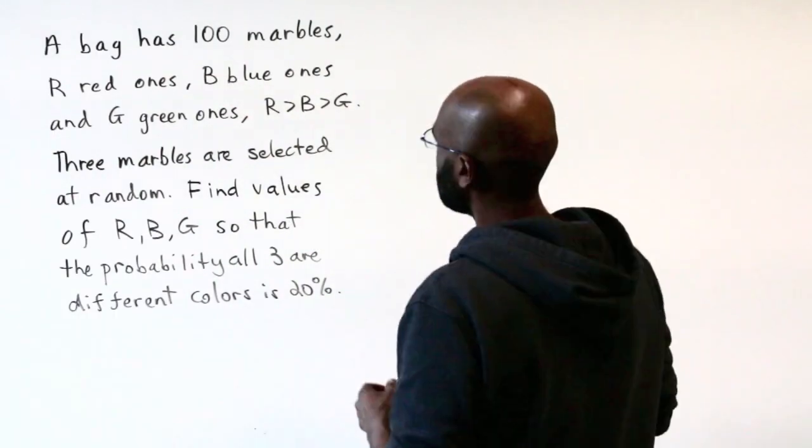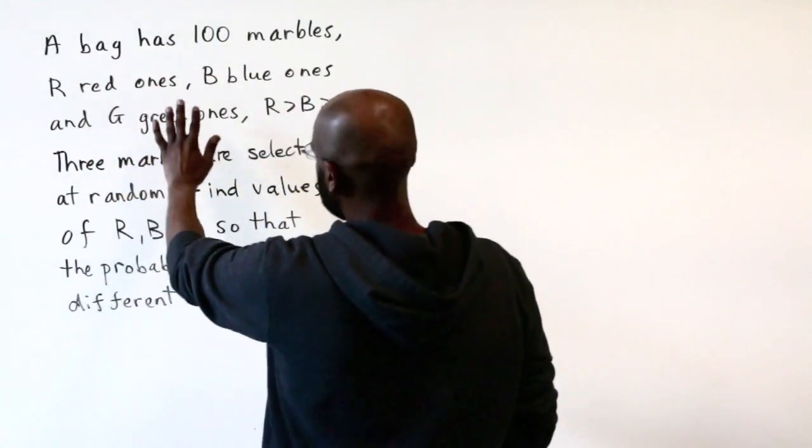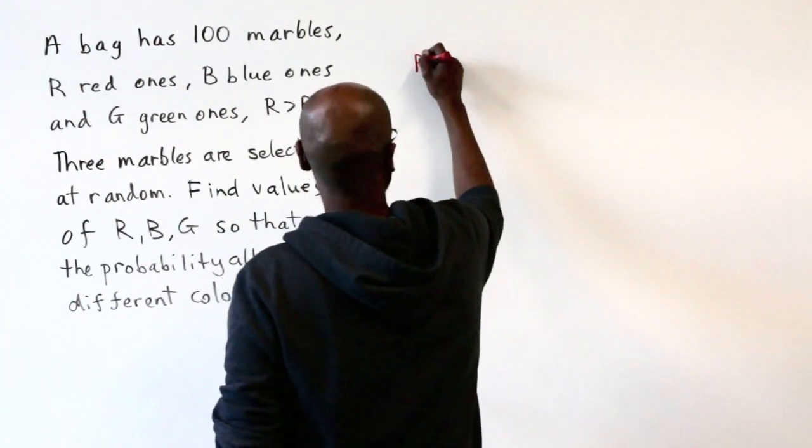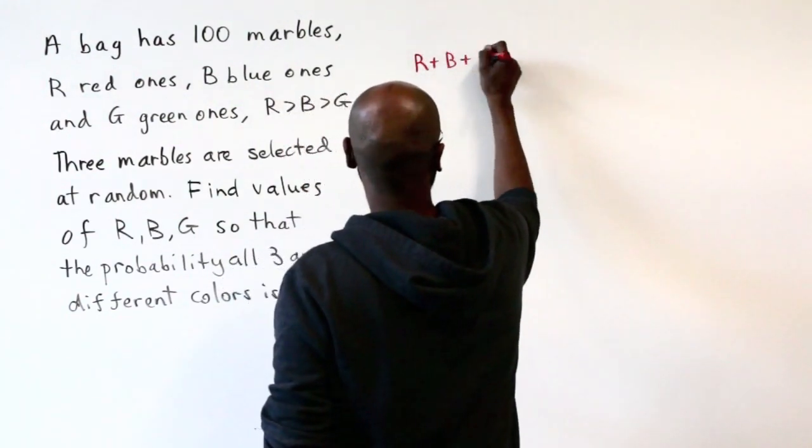Alright, so let's revisit. The total number of marbles is 100, so we know that R plus B plus G has to be 100.